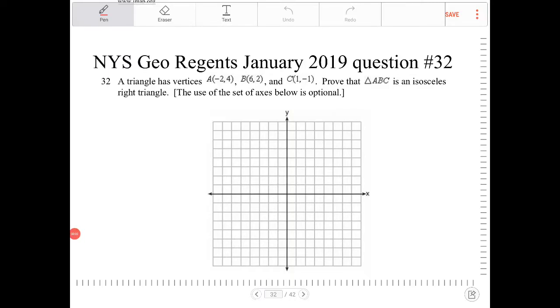A triangle has vertices A(-2, 4), B(6, 2), and C(1, -1). Prove that triangle ABC is an isosceles right triangle.